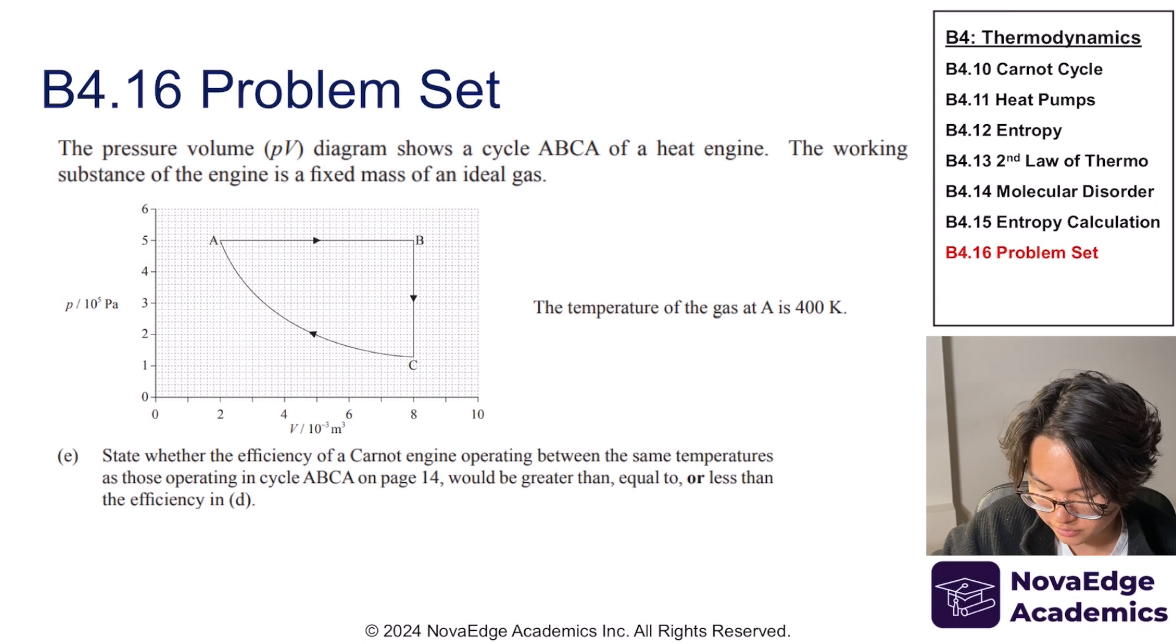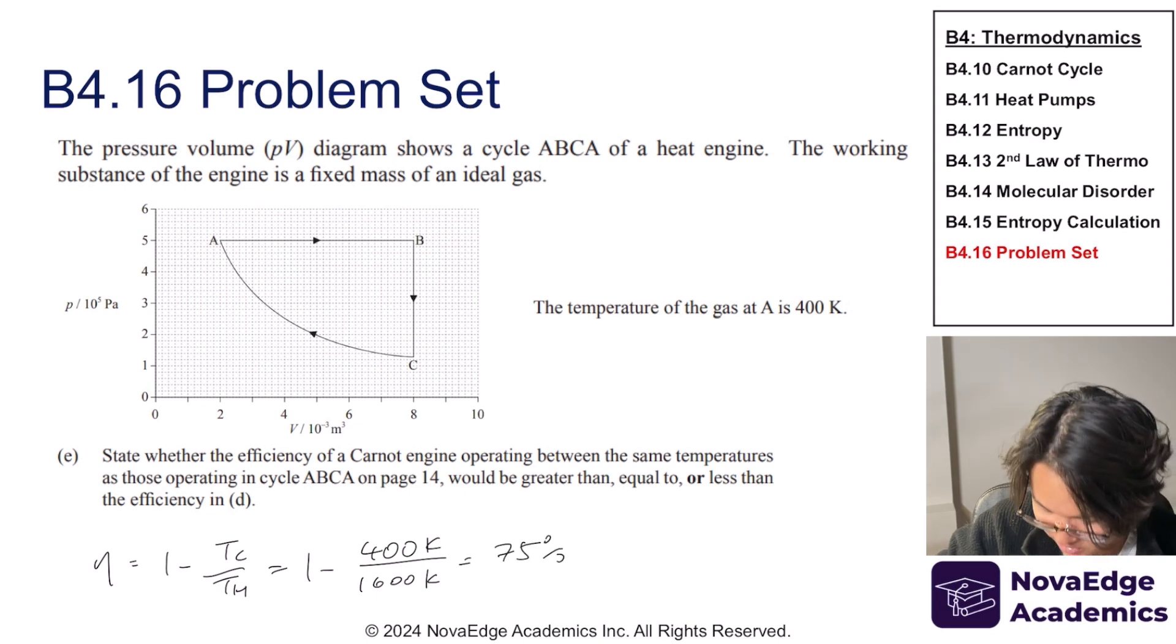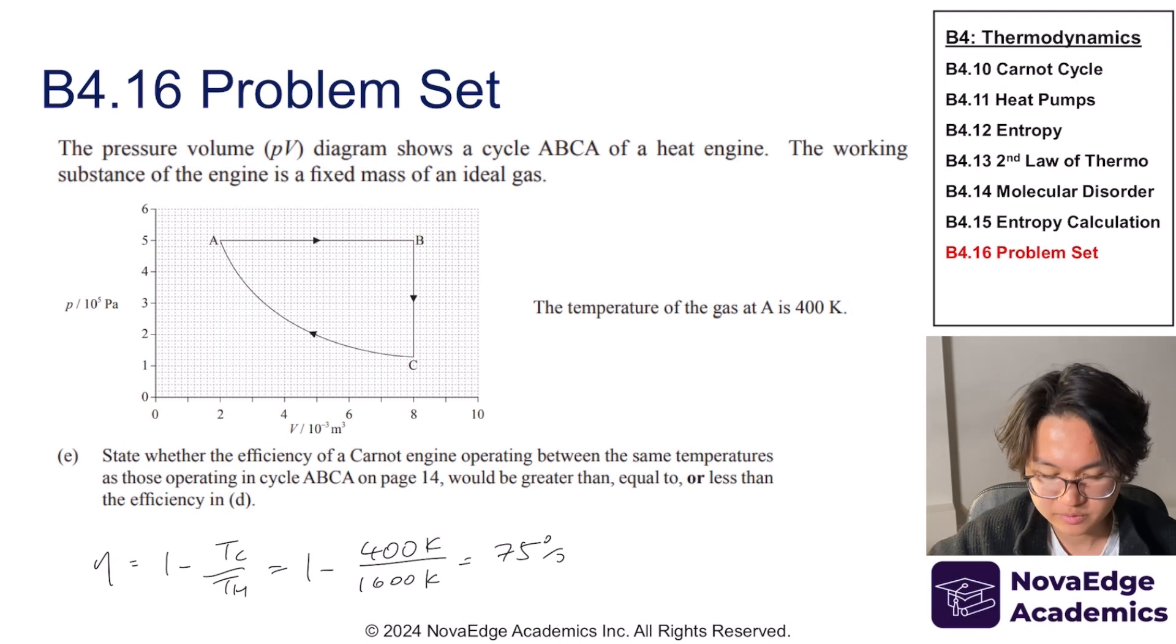So let's do part E. So part E asks us whether the efficiency of a Carnot engine operating between these same temperatures will be higher or equal or less than. And well, we actually already know that it's always going to be greater than because Carnot efficiency is actually the maximum we'll be able to get in any heat engine. So that conceptual part's done, but we should probably show it as well. And we know that Carnot efficiency is going to be equal to 1 minus T_c over T_h. That's going to be equal to 1 minus 400 Kelvin over 1,600 Kelvin, which is just 75%. So that's substantially higher than what we had as a normal ABCA heat engine cycle that we've just solved. And that's the end of this past paper problem.